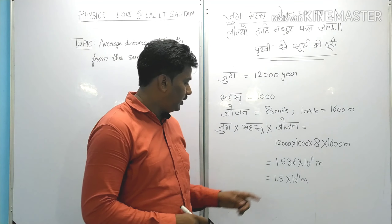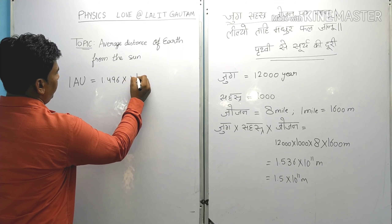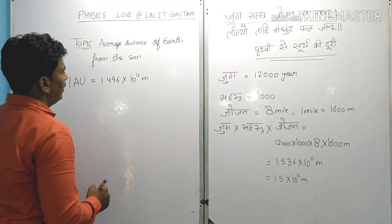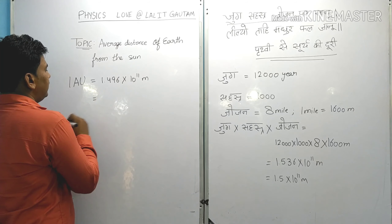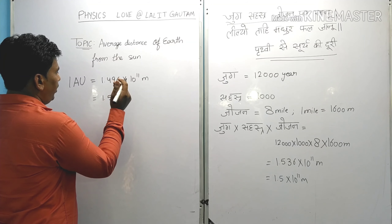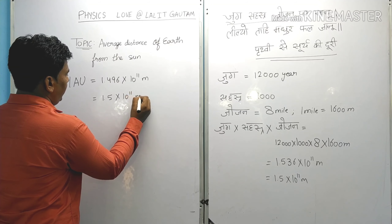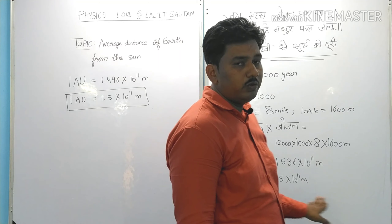In physics also, we have a unit which defines the average distance from the earth to the sun, and that unit is known as the astronomical unit. One astronomical unit is the average distance from the earth to the sun, and 1 astronomical unit is equal to 1.496 × 10¹¹ meters, which we can round off to 1.5 × 10¹¹ meters.